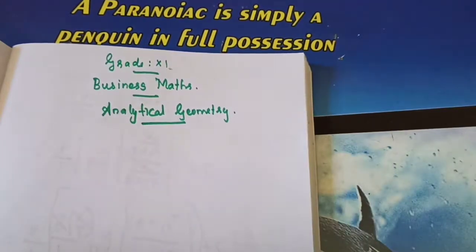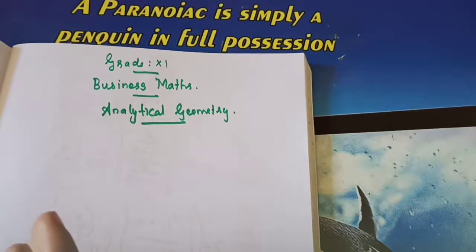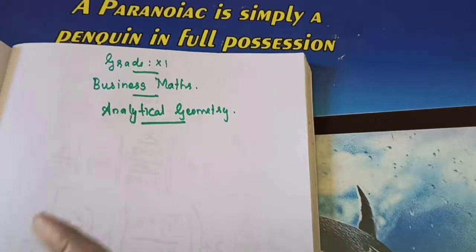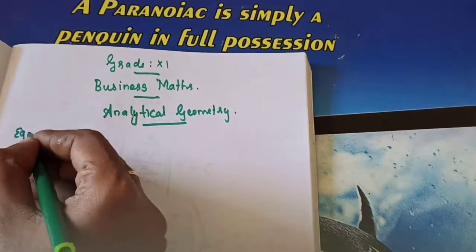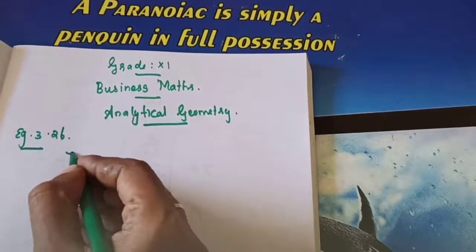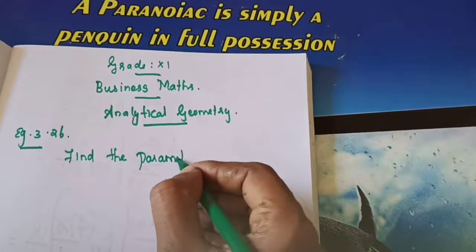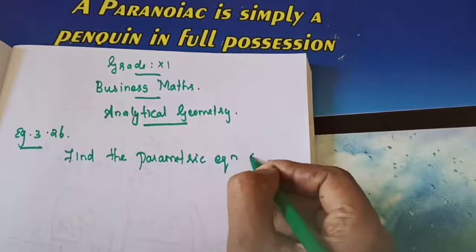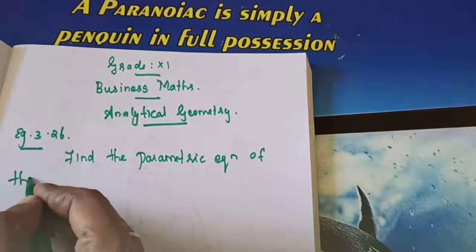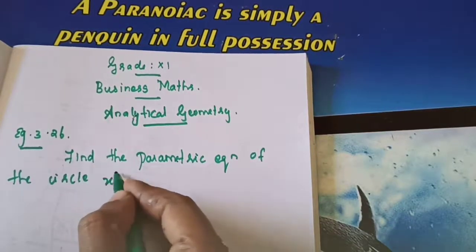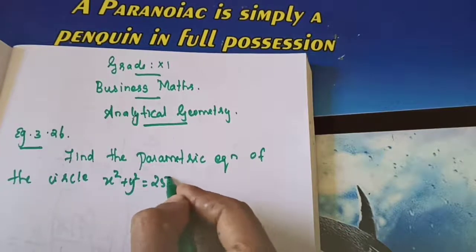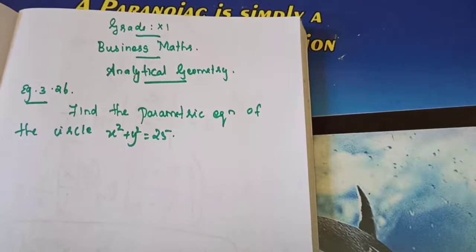So in our last class, I was not able to give the homework for you. So parametric form of a circle — one formula I asked you to write. I hope you all completed. So there is only one problem in that section. So first you will complete that. Example 3.26: the parametric equation of the circle. What is the circle equation? x squared plus y squared is equal to 25. Find the parametric equation of the circle.